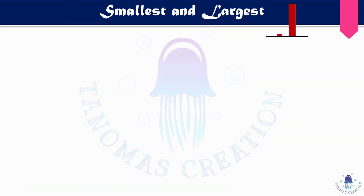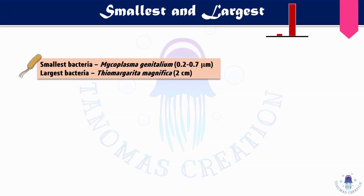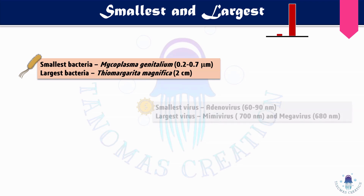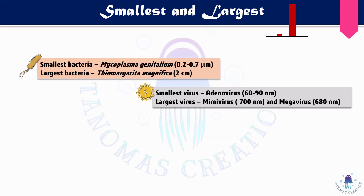Now for a quick review of the smallest and largest microorganisms in each group. The smallest bacteria is Mycoplasma genitalium, with a size of 0.2 to 0.7 micrometer. The largest bacteria is Thiomargarita magnifica, with a size of 2 centimeters — very large compared to typical bacterial sizes.